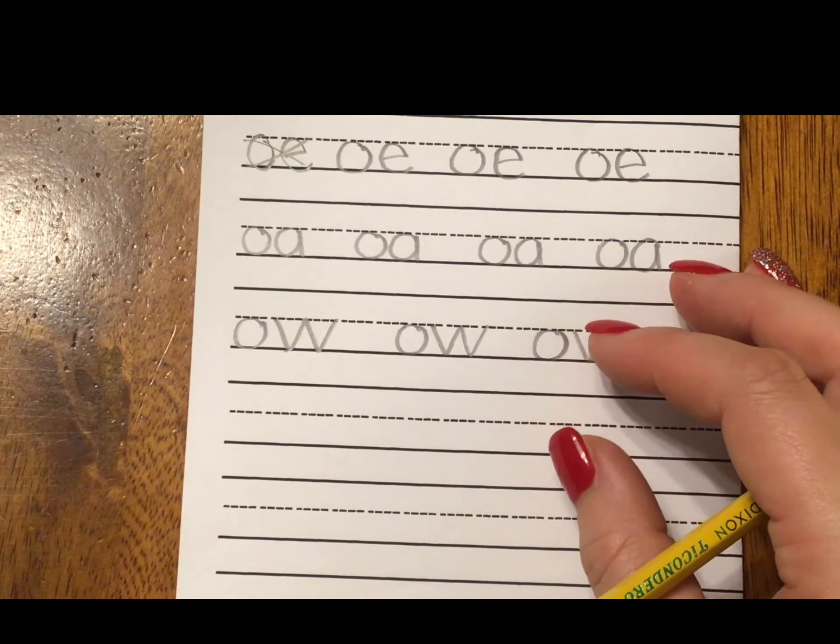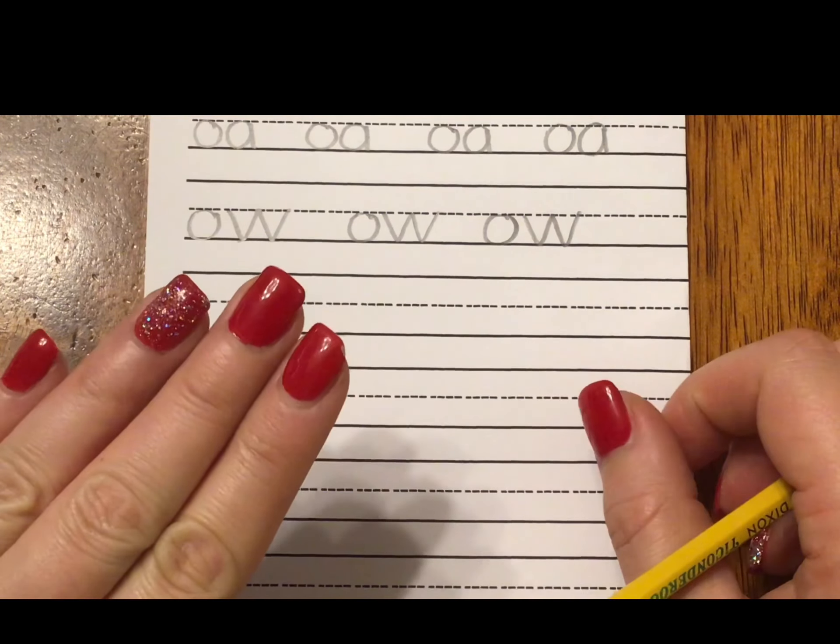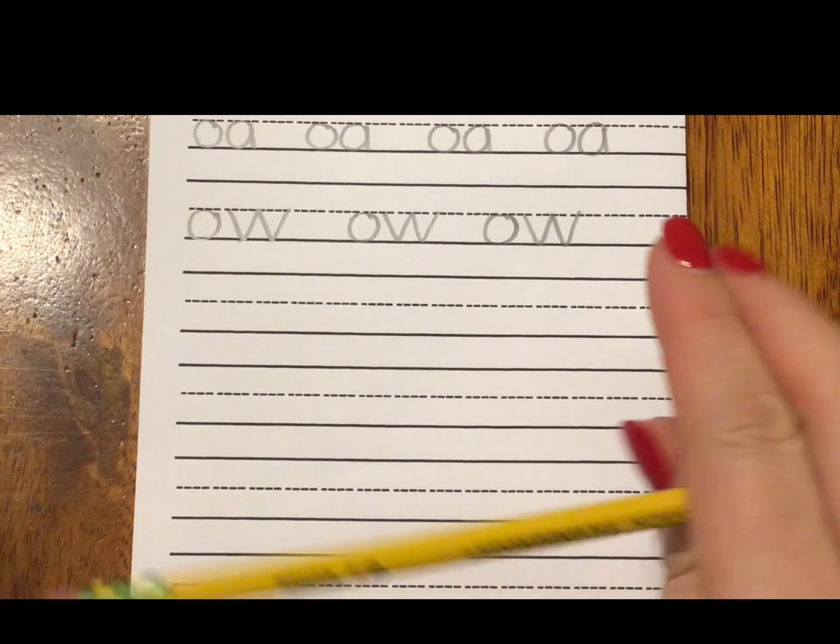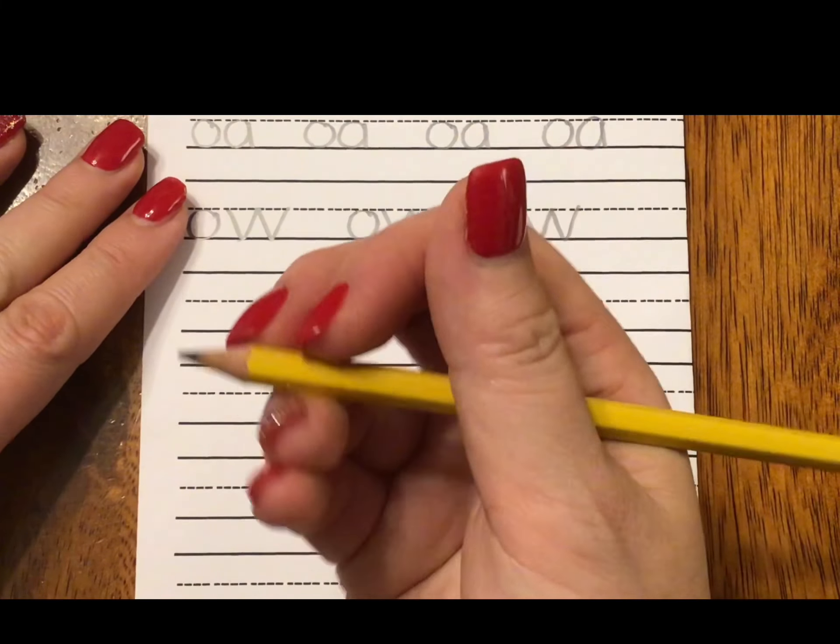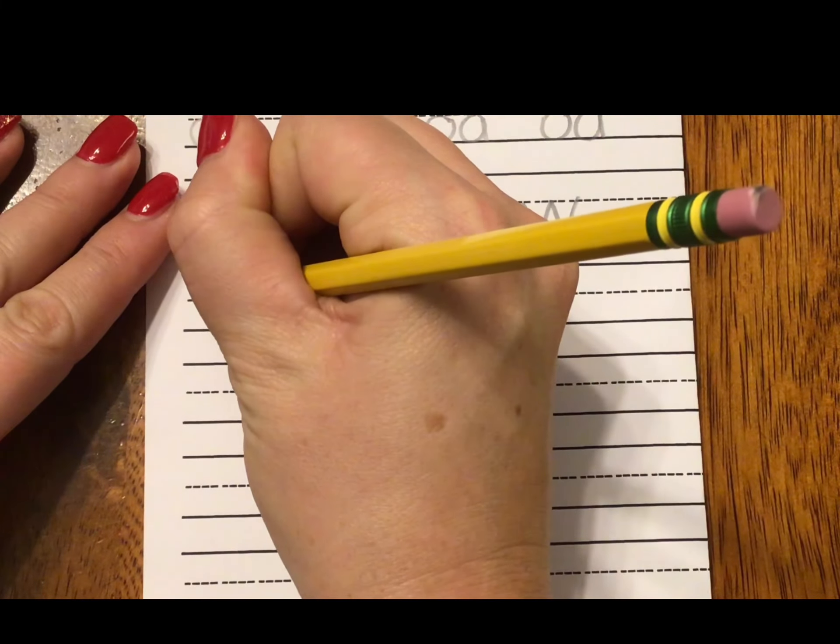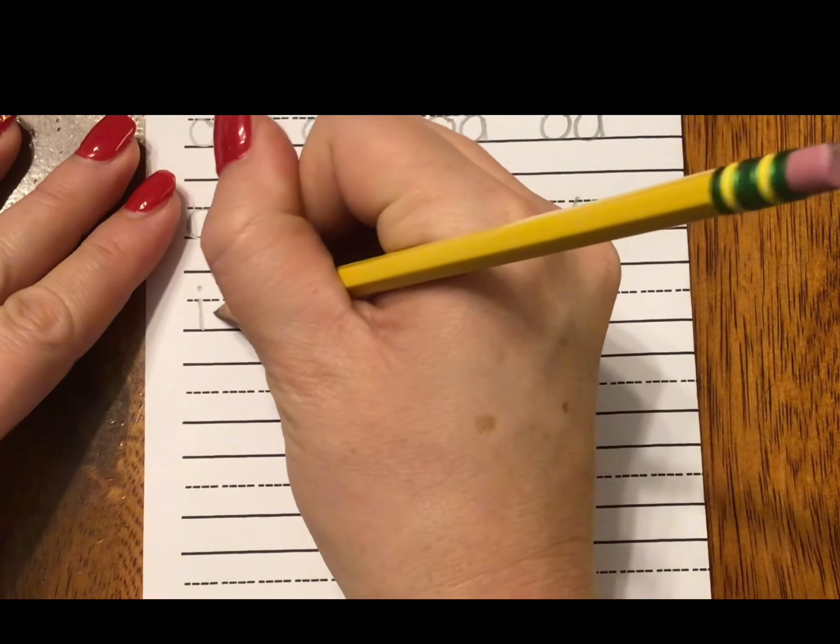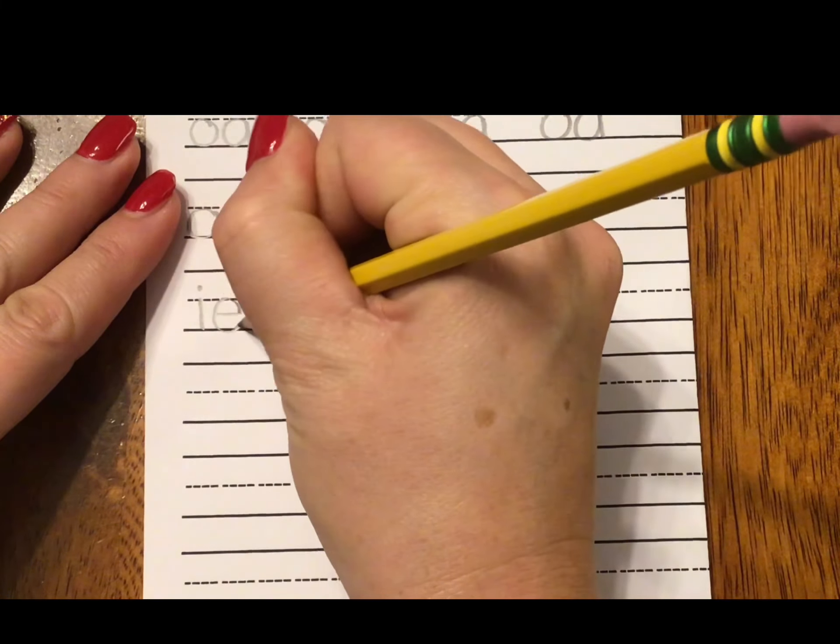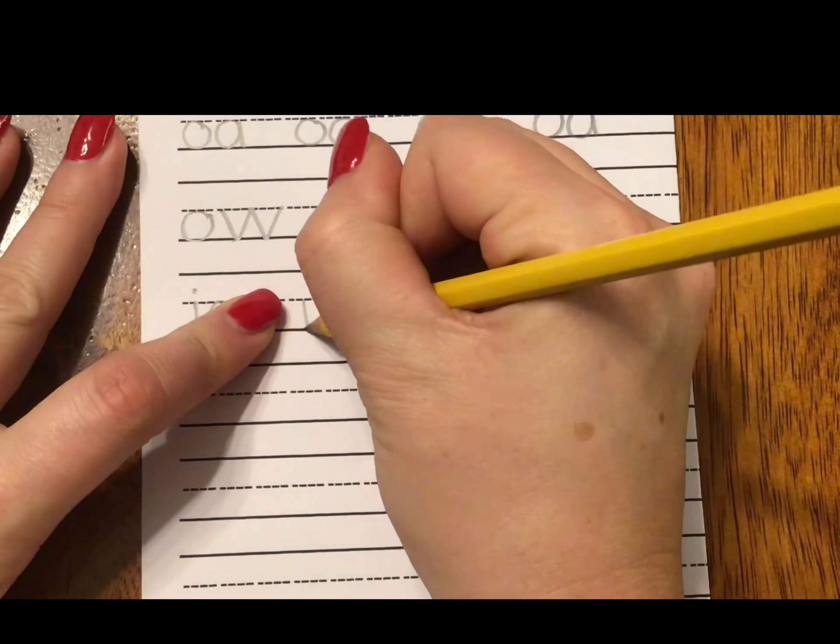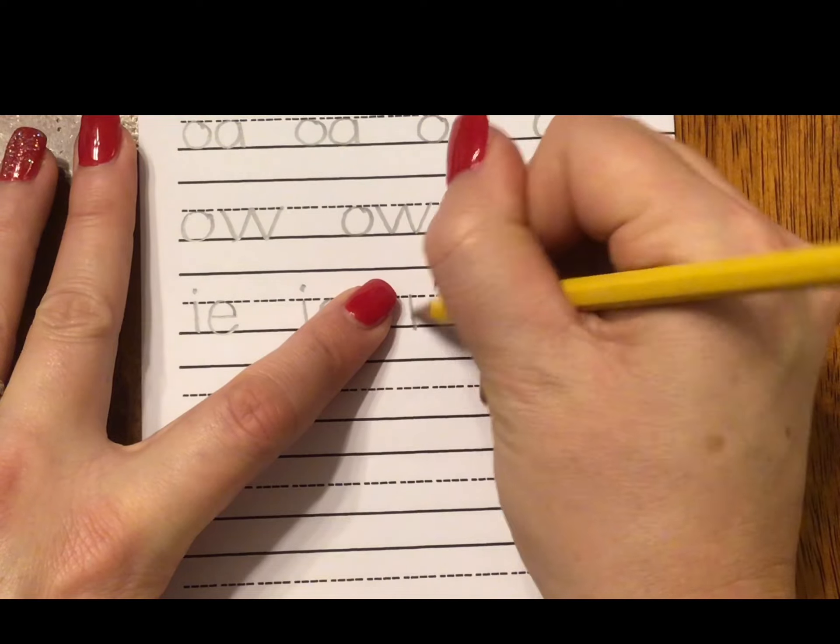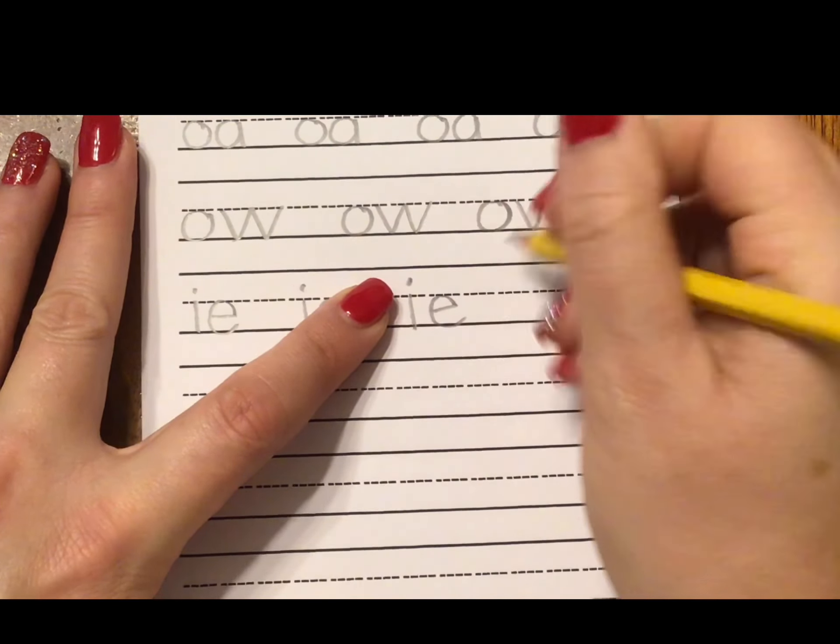And our next sound is E-I. Say it with me. E-I. Go ahead and write it. E-I. So that's my I-E starting at the dotted line, pulling straight down. Pick up your pencil. Tiny dot. Straight across, up and around the clock. So I have I-E says E-I.